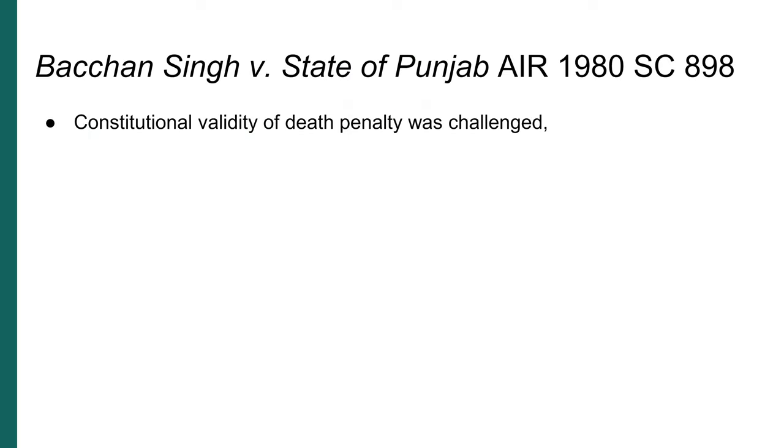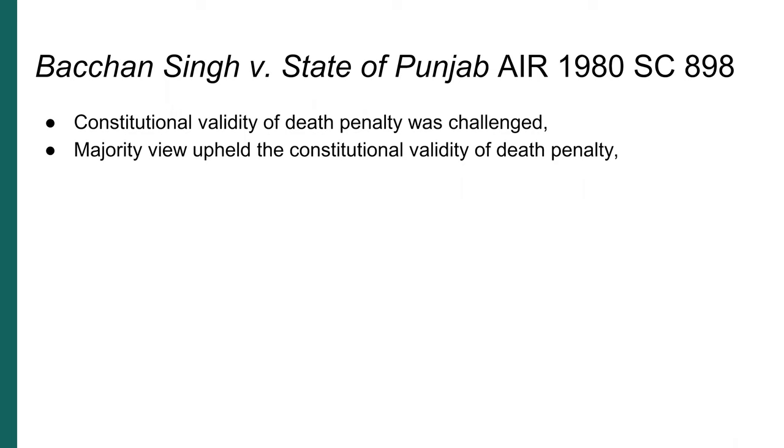The discourse on death penalty opens up a very interesting discussion on rule of law. Civil liberty groups have been advocating for abolition of death penalty, arguing that it takes away the fundamental right to life of a citizen. Also, those who are on death row mostly come from vulnerable socio-economic backgrounds. The constitutional validity of death penalty has been the subject of contention in court cases. In the case of Bachan Singh versus State of Punjab, the majority view upheld the constitutional validity of death penalty, but said it should be awarded only in the rarest of rare cases.